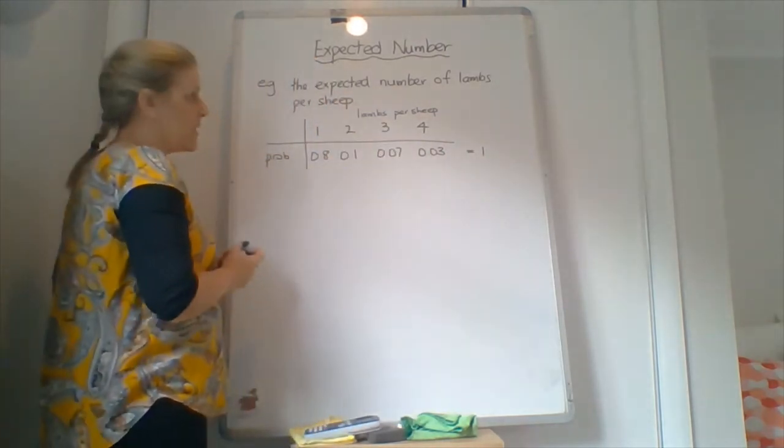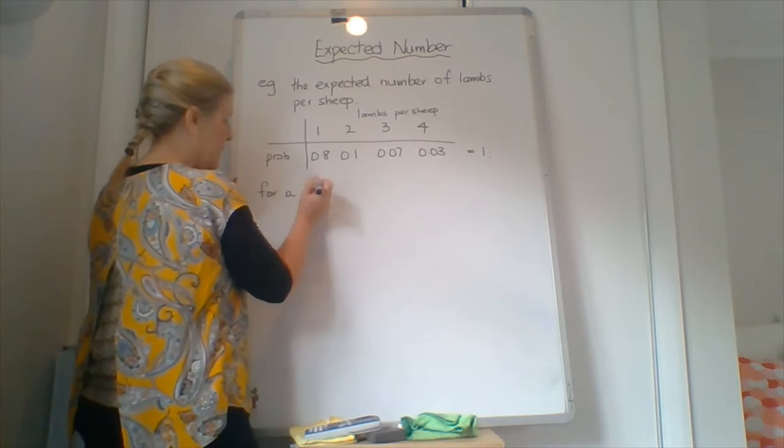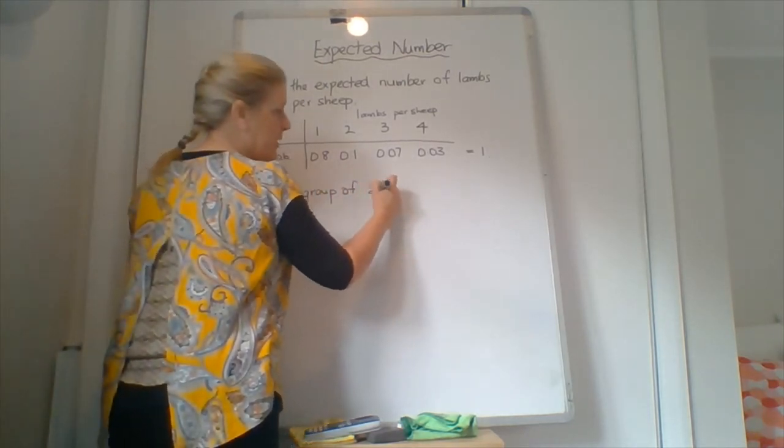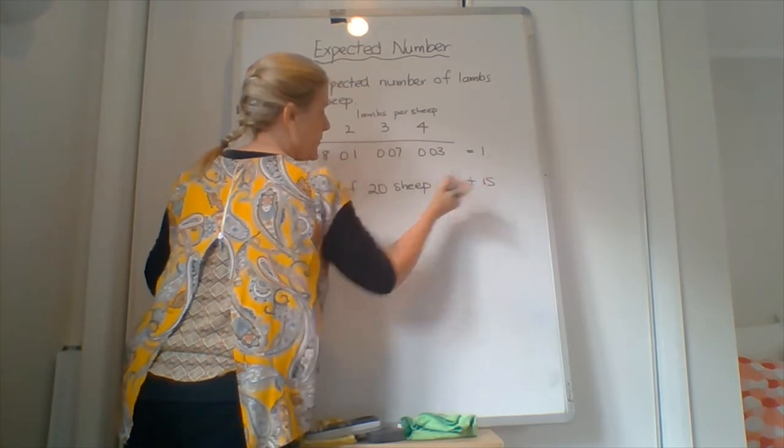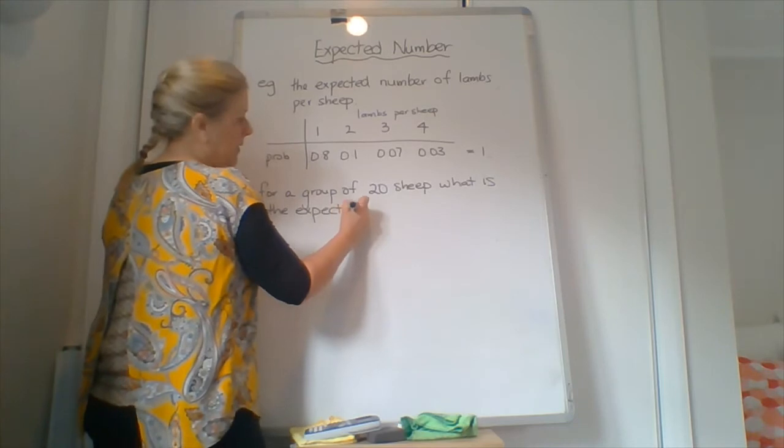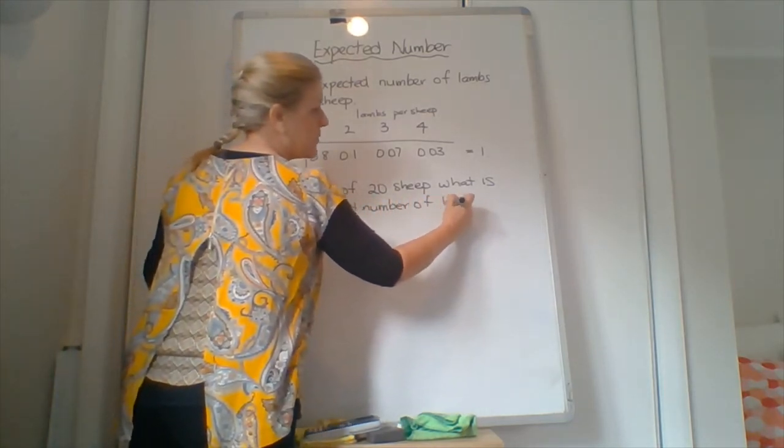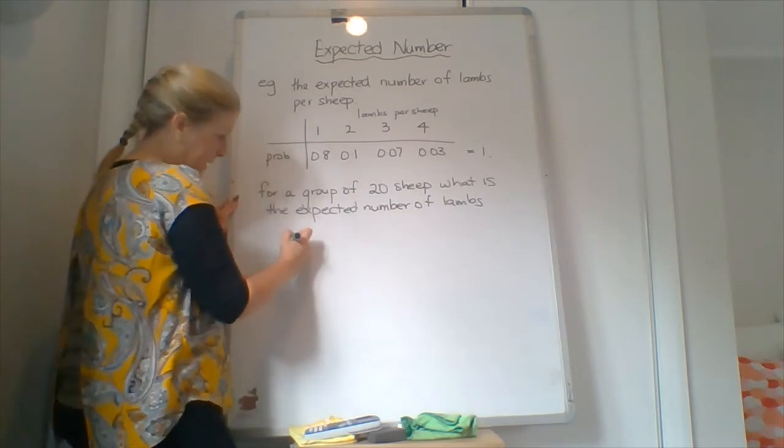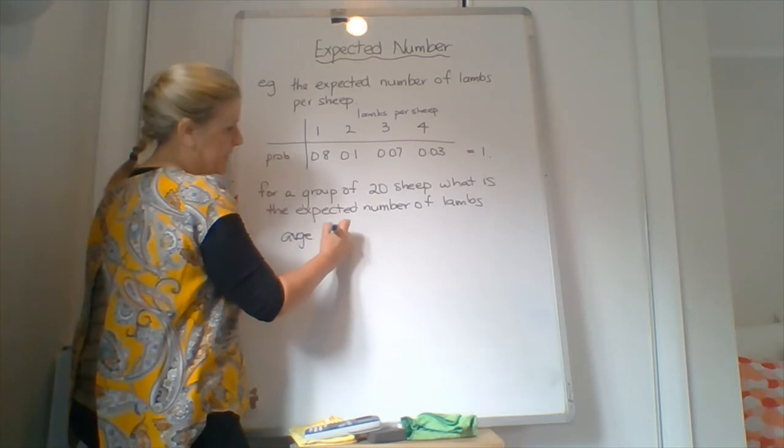So we have to work out for a group of 20 sheep, what is the expected number of lambs? So what we have to work out first is some sort of average out of this. So we expect, so what we call this as an average, we write this as an E of X.